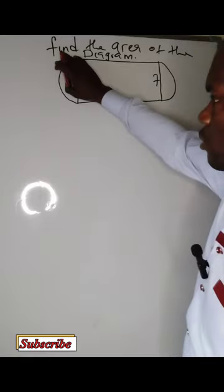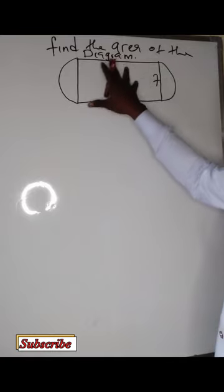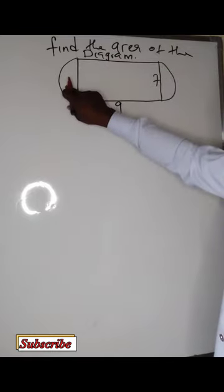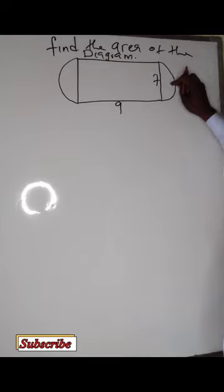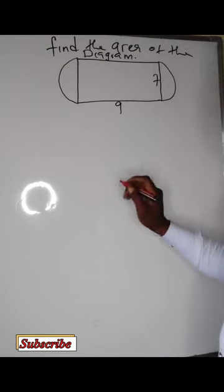Consider this as a semicircle. This is a semicircle. Then this is a rectangle. So to find the area of this shape, we need to find the area of this semicircle, find the area of this semicircle, the area of this one. Then you add all of them. So let's start with the area of the rectangle.